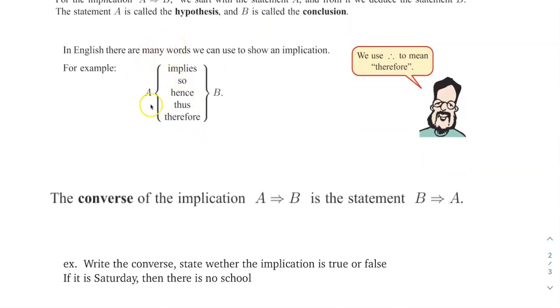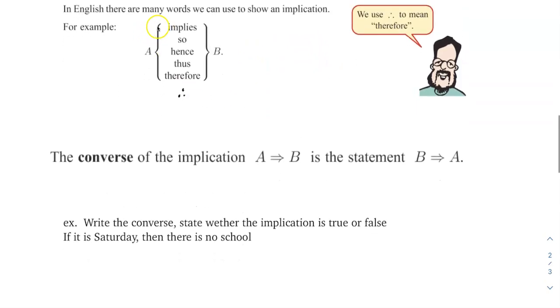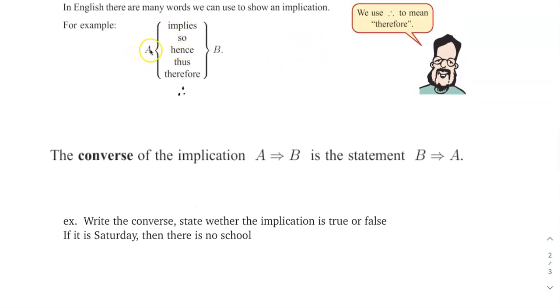In English, there are many words that you use to show implication. When you do proofs like in college or something, you use all of these. So you can say A implies B, A so B, A hence B, A thus B, A therefore B. These are just some examples. Therefore, you can see a lot of times you use in mathematics a little three, three little circles. All sorts of answers are therefore. These are all ways you go, okay, I'm trying to say this guy. I know this guy's true, so this guy must be true.